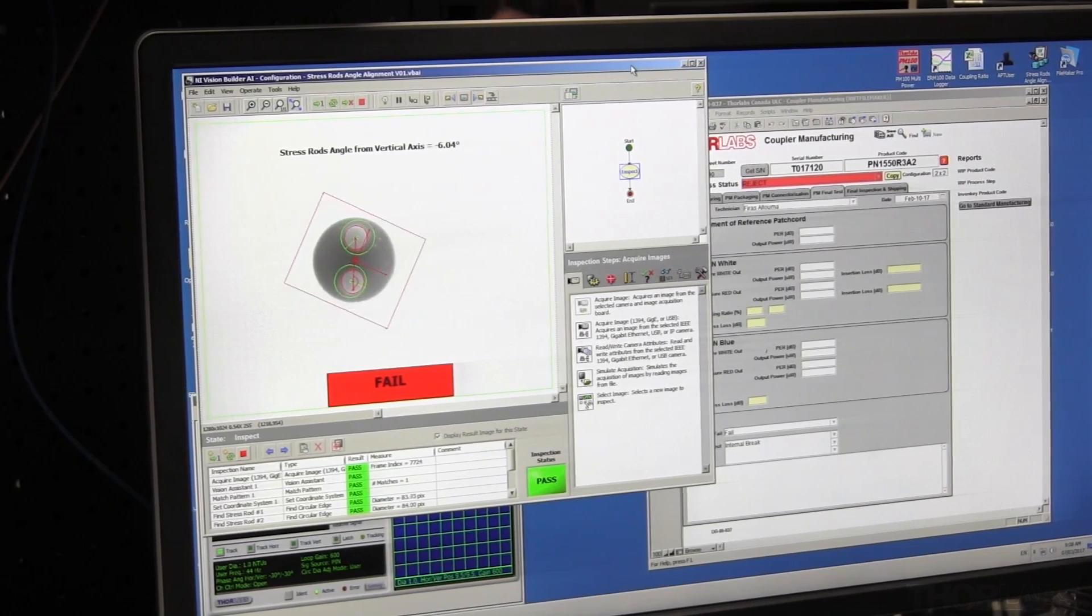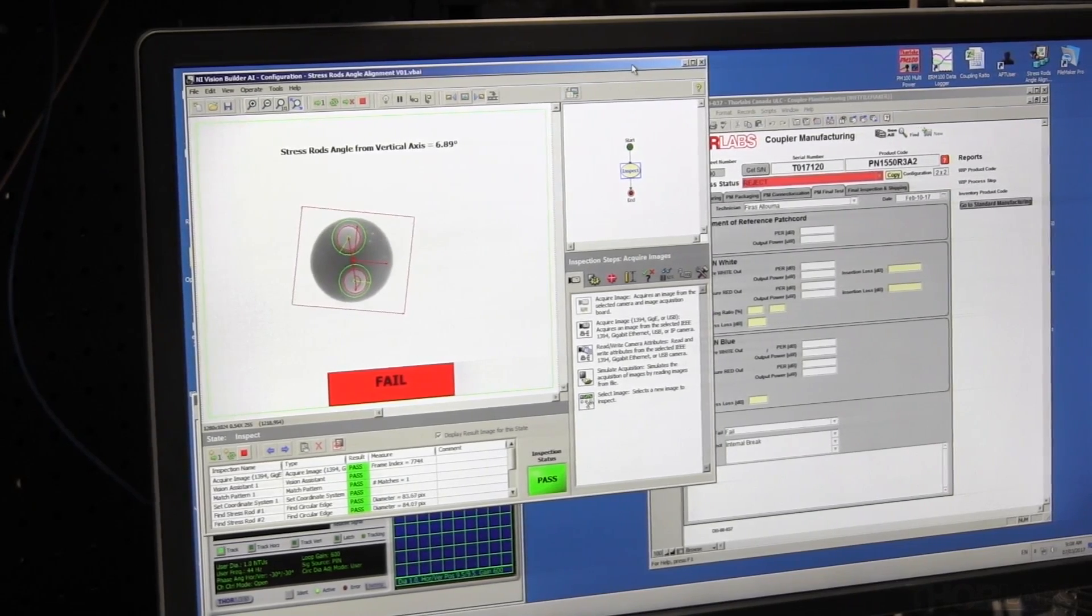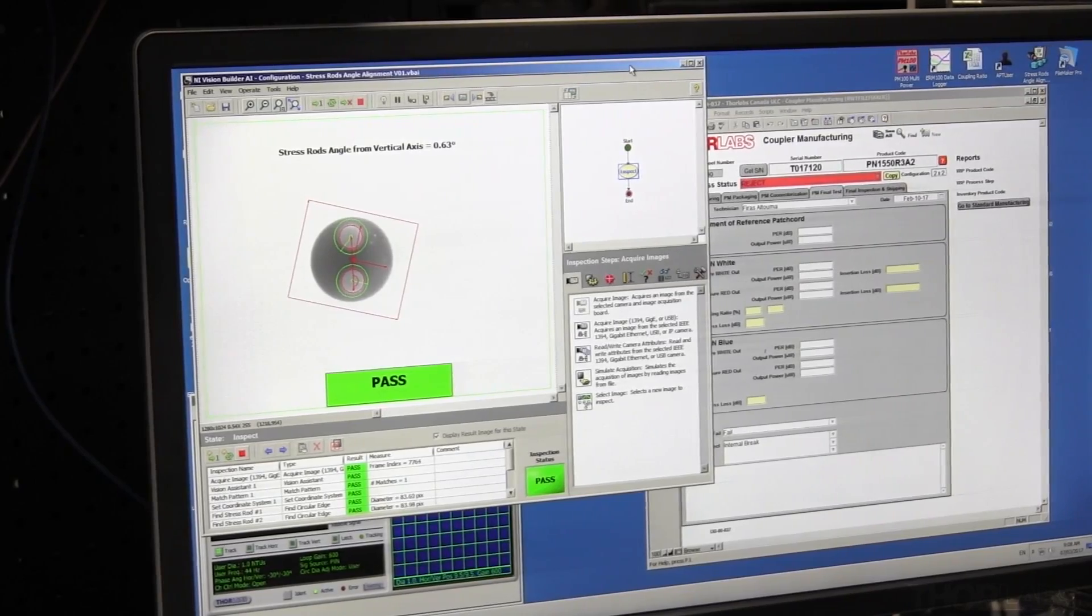Polarization-maintaining fibers must have their stress rods viewed so the alignment key in the connector can be set in place.